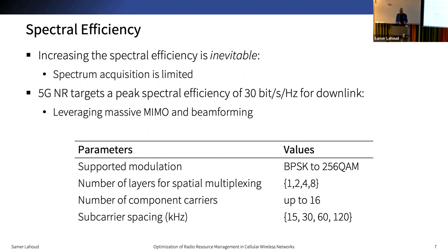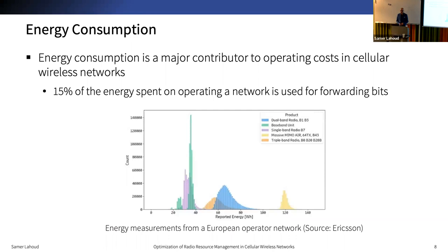Noting that 5G uses typically similar modulation and spatial multiplexing parameters as in LTE, this high efficiency can only be possible by leveraging more than one channel of communication with the help of massive MIMO and techniques such as beamforming. When fulfilling the demanding performance requirements, cellular wireless networks need to improve system efficiencies, and these do not only include spectral efficiency but also energy efficiency.